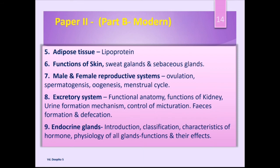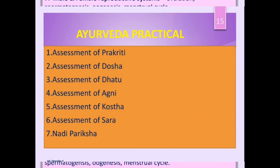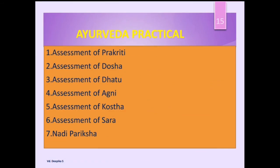So, we have now seen the theory portion. In theory, it is for 200 marks with 2 papers — Paper 1 and Paper 2 — each having a modern concept section and an Ayurveda portion separately. Next, we will look at the practical portions. Under practical portions, we have both Ayurveda practicals as well as modern practicals.